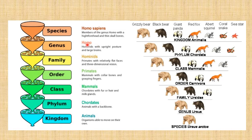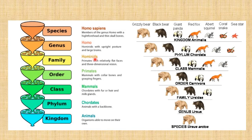Starting from kingdom, man falls under the animal kingdom — organisms able to move on their own. Under phylum, he falls under chordates, meaning animals with a backbone. Under class, he falls under mammals — chordates with fur or hair and milk glands. Under order, man falls under primates — mammals with collarbones and grasping fingers. Under family, he falls under Hominidae — primates with relatively flat faces and three-dimensional vision. Under genus, he falls under Homo — hominids with upright posture and large brains. Under species, he is sapiens — members of genus Homo with a high forehead and thin skull bones.